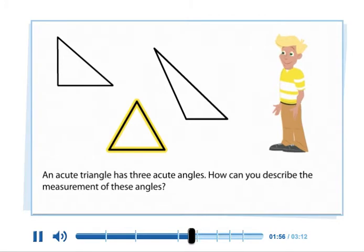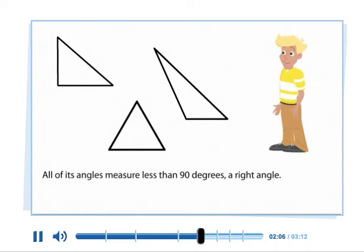An acute triangle has three acute angles. How can you describe the measurement of these angles? All of its angles measure less than 90 degrees, a right angle.